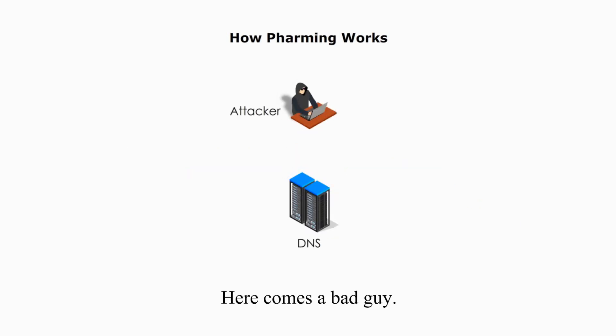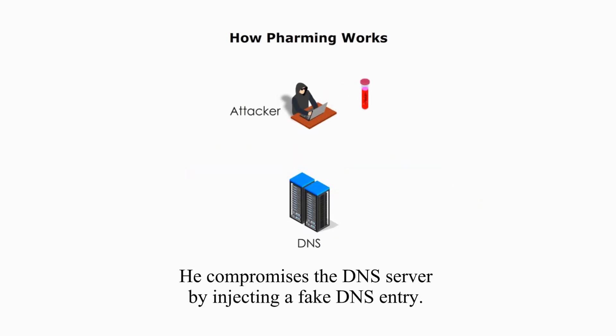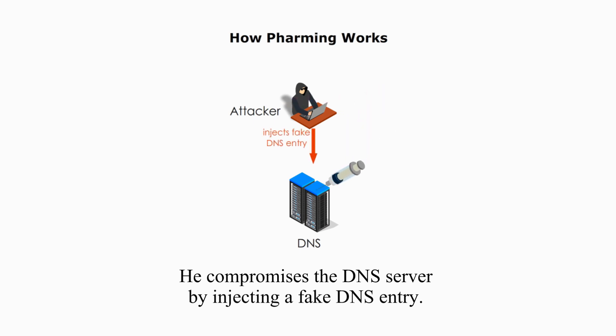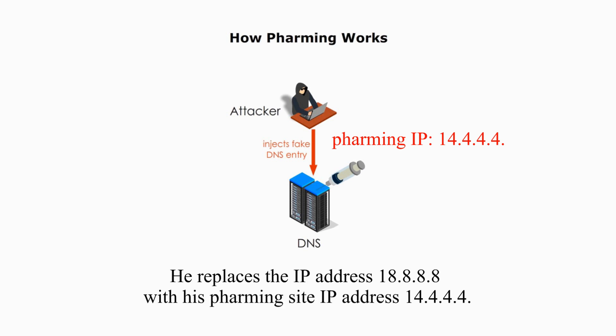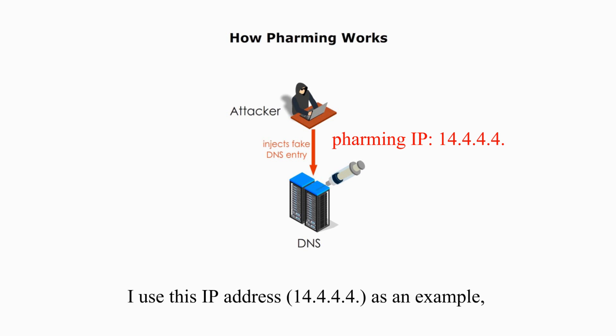Here comes a bad guy. He compromises the DNS server by injecting a fake DNS entry. For example, he replaces the IP address 18.8.8.8 with his pharming site IP address 14.4.4.4.